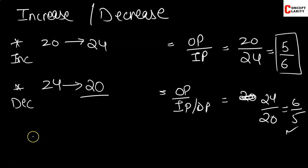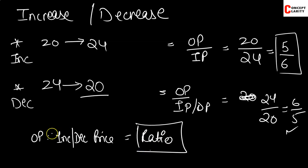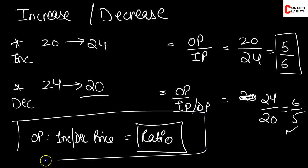So we will get a general formula: original price is in ratio to the increased or decreased price, and that ratio is what is given to us in the exam. This is our general formula for whenever increase and decrease questions come. Let's try out a few sums to see how the formula works.